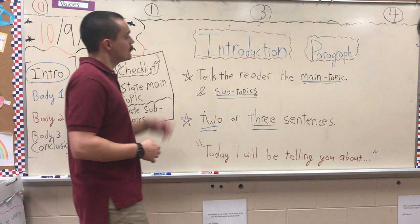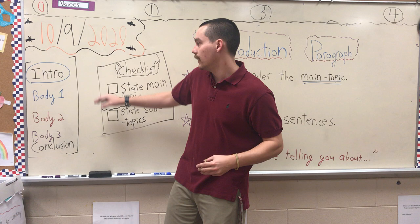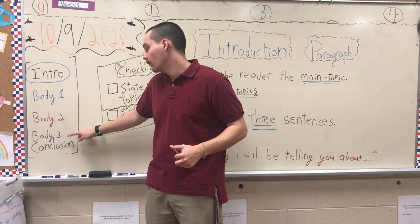So in our little plot here of what your essay should look like, again, five paragraphs: intro, body one, body two, body three, and conclusion — one, two, three, four, five. We're on the very first one.